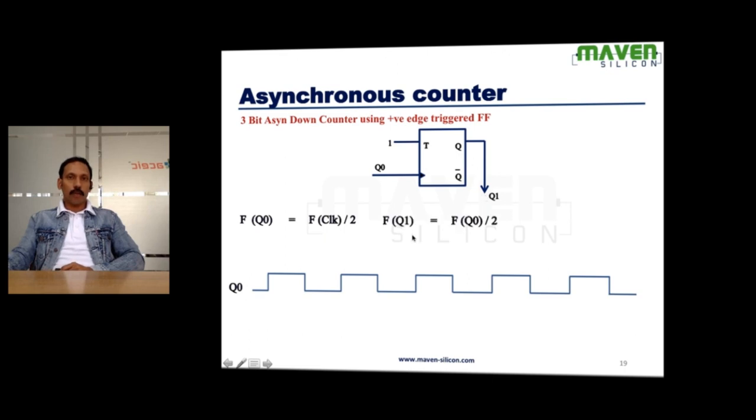Now, if you look at Q1, it's going to toggle at every positive edge of Q0. Now, you calculate the frequency of Q0. Look at here. That's equal to frequency of the clock divided by 2. Now, if you calculate the frequency of Q1, that's equal to frequency of Q0 divided by 2.